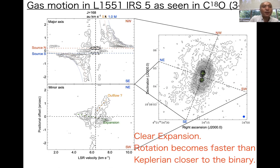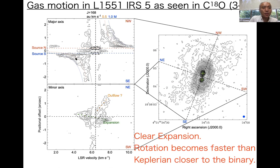Along the minor axis, there is also a velocity gradient. Since the western side is the far side and the eastern side is the near side, the far side shows red-shifted and the near side shows blue-shifted, which means expansion in the circumbinary disk. Furthermore, if you get closer to individual binary stars, the velocity increase exceeds that of Keplerian rotation with 0.5 solar masses — so rotation velocity becomes faster closer to the binary.